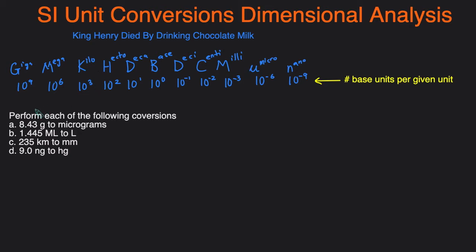Now let's get familiar with writing out what these conversions mean. These numbers tell you the number of base units per given unit. For example, if we pick kilo, that just means that in every one kilogram there are 10 to the 3 grams. Similarly, if you had one megaliter, that equals 10 to the 6 liters, because mega is 10 to the 6.